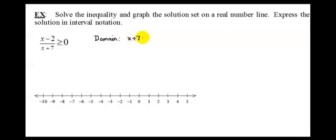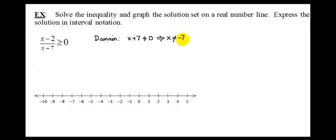So we solve this: x plus 7 cannot equal 0. That means if I subtract 7 from both sides, we know x can never equal negative 7. And we're going to need this when we're trying to write our final answer.